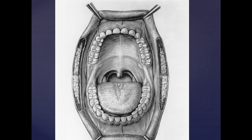We have an unlabeled mouth here. We see our lips, which are being retracted by our retractors. You see our superior labial frenulum, followed by the gum or the gingiva. You've got your central incisors, the lateral incisors, your canines, your premolars, and your molar teeth.